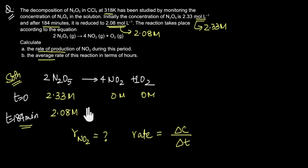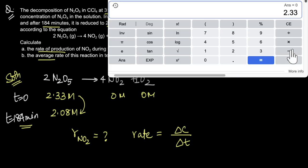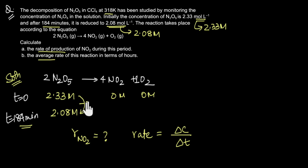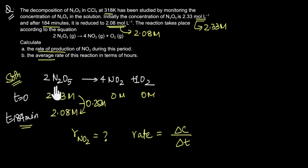In 184 minutes, the concentration of N2O5 dropped from 2.33 to 2.08 molar. So the amount of N2O5 that has reacted is 2.33 minus 2.08, which comes out to be 0.25 molar. Now if we look at this equation, 2 molar of N2O5 gives 4 molar of NO2, so the amount of NO2 formed will be twice the amount of N2O5 that has reacted. Since 0.25 molar of N2O5 has reacted, the amount of NO2 formed is 0.5 molar.